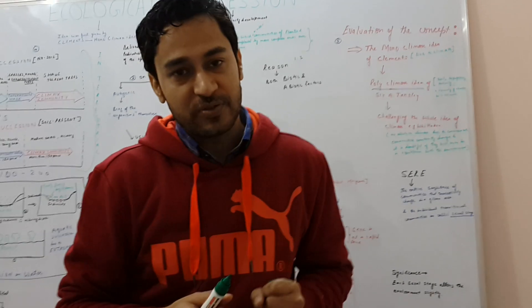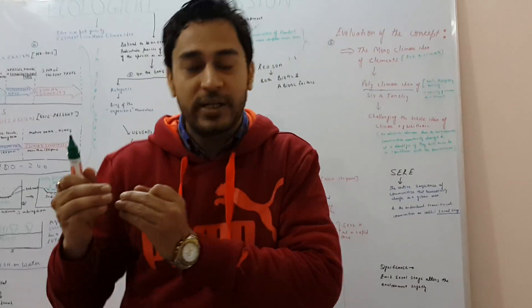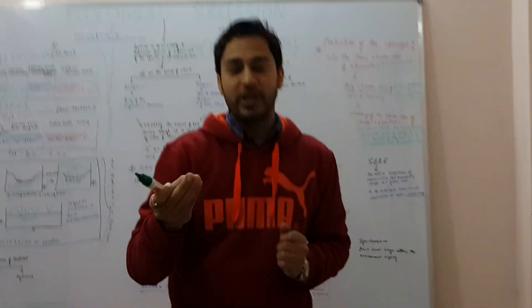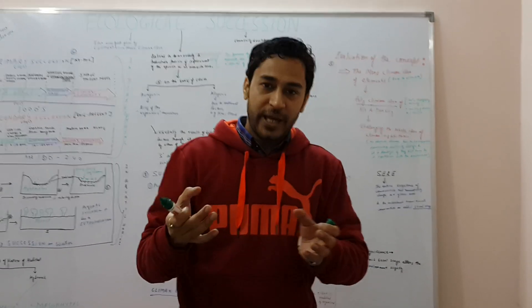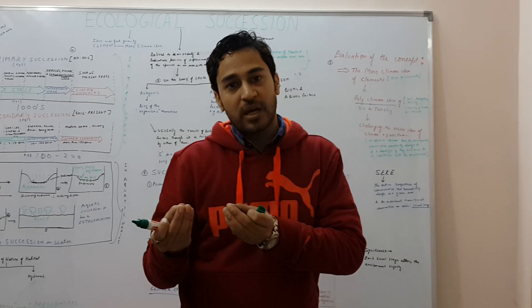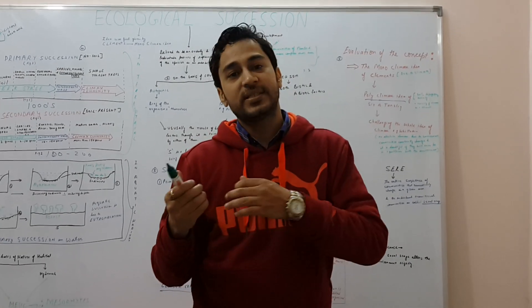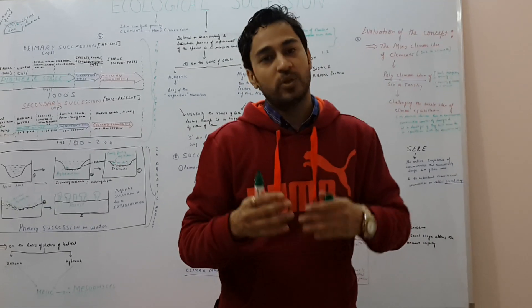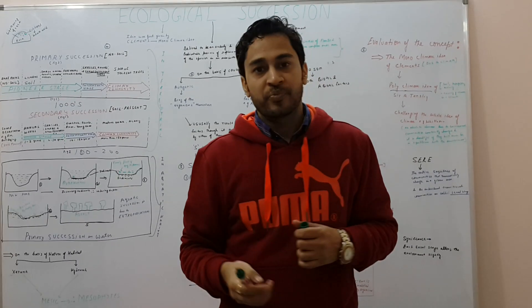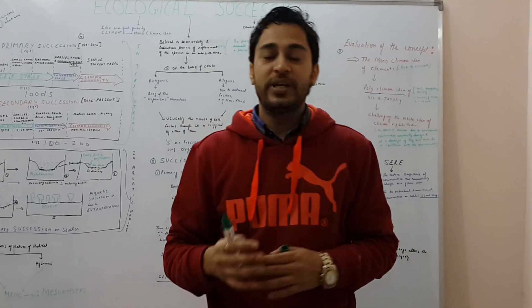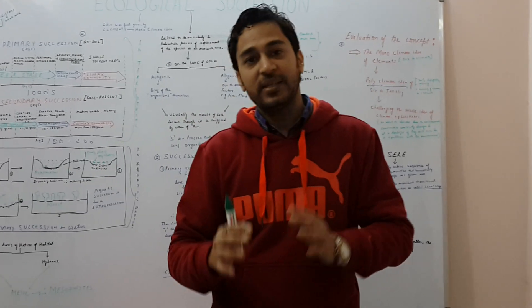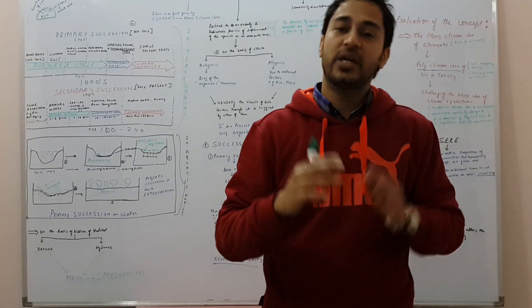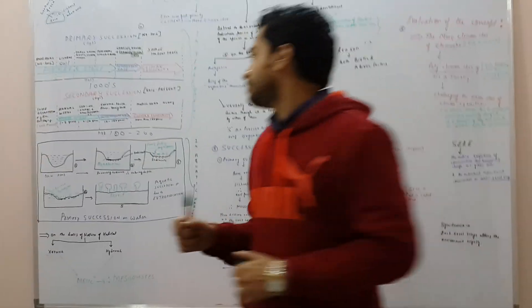When the lichens or the pioneers initially came in, they come and alter the environment a little bit. For example, the lichens come in, they lead to soil formation. So then larger plants come in which require more nutrients and sunlight, so the lichens are actually removed. Whereas if we talk about climax communities, they do not change the environment to their own detriment. That is why they are able to survive there. They are also in equilibrium with the climate.